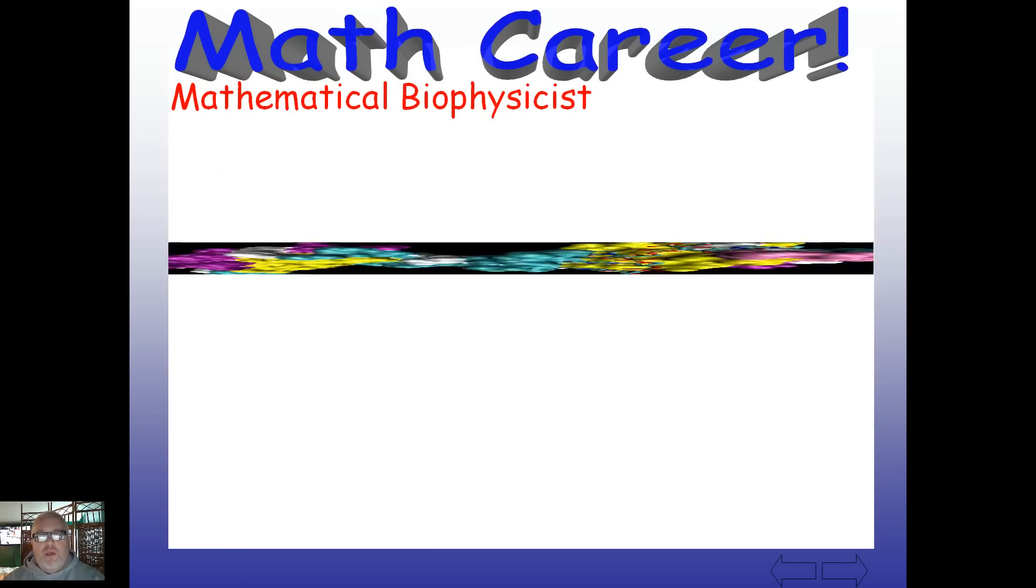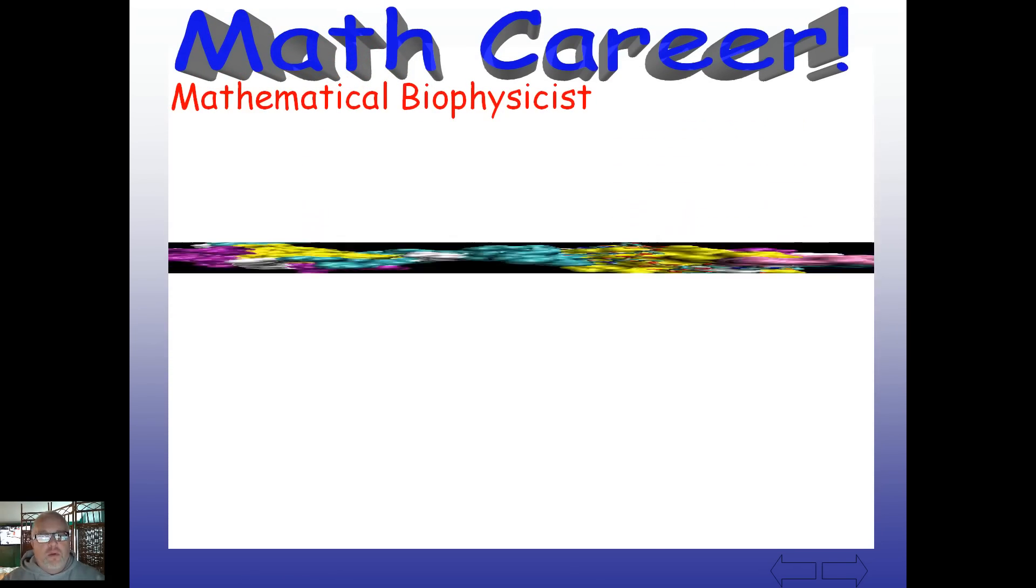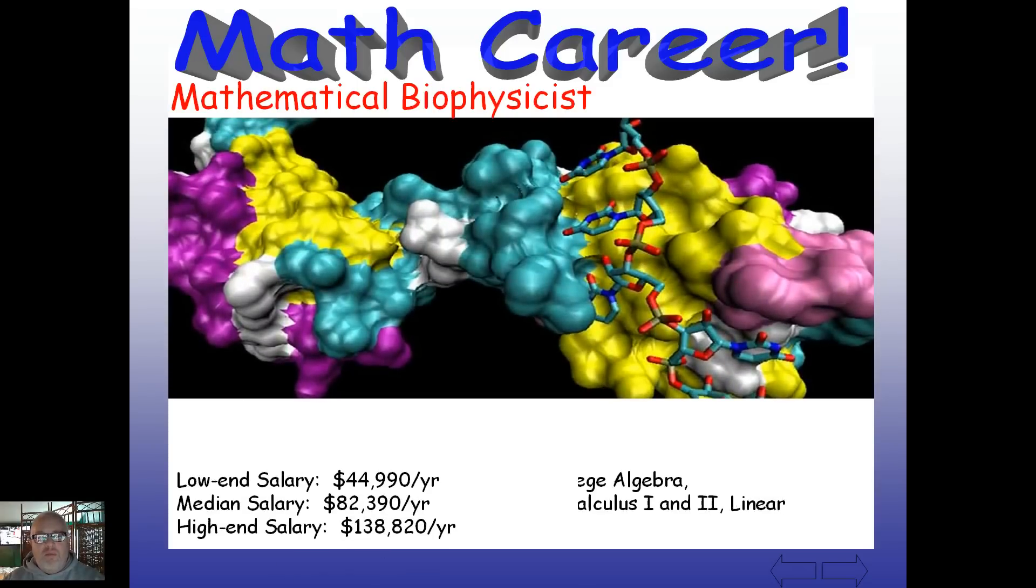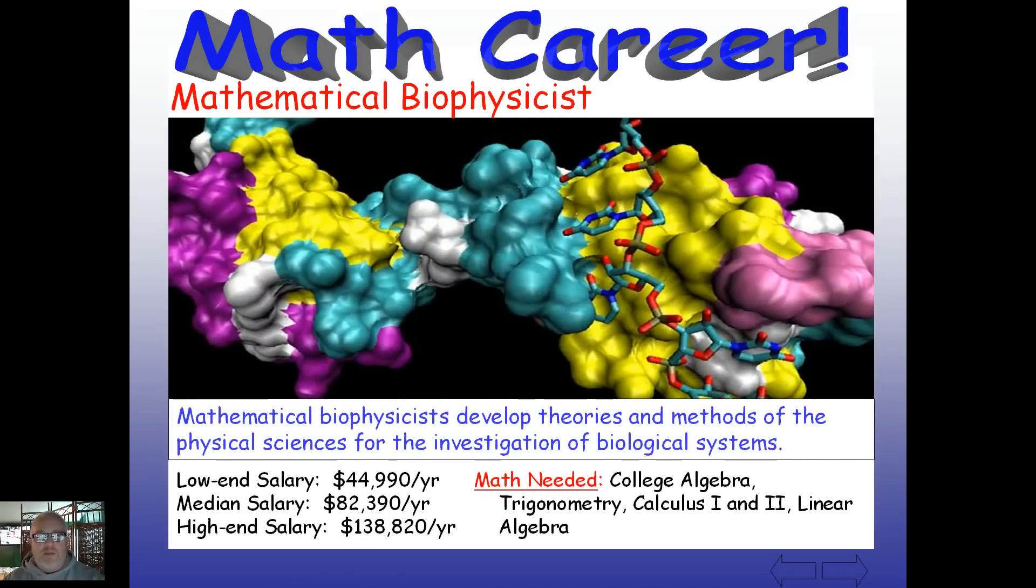On our math career for today, here's our offering: a mathematical biophysicist. That's a mouthful there. These people, of course, are going to work usually in the chemistry or medical field, but they're going to develop theories and methods of physical sciences for the investigation of biological systems.